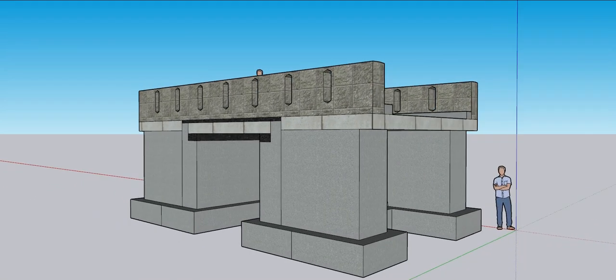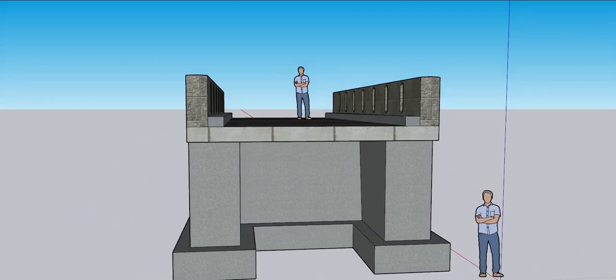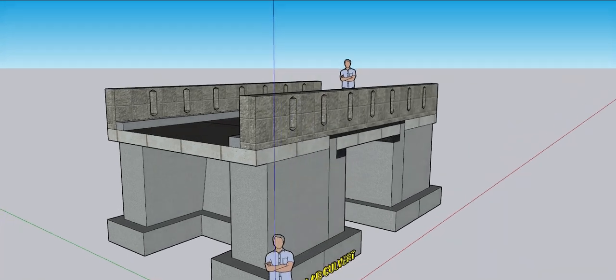Slab culverts do not have bottom slabs, preserving the natural flow of water and the safety of high-velocity vehicles.